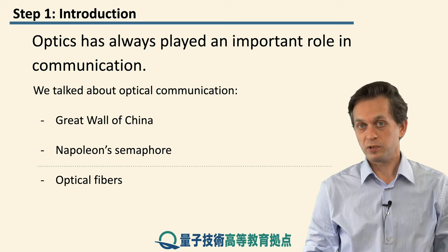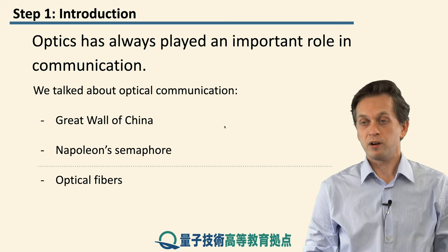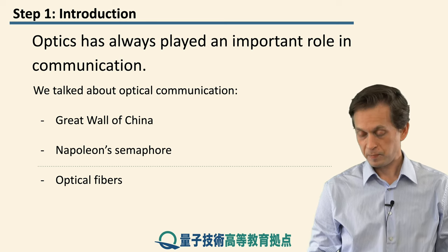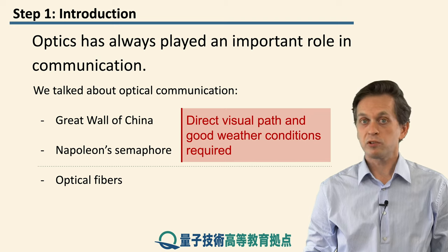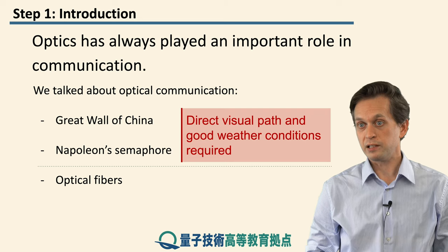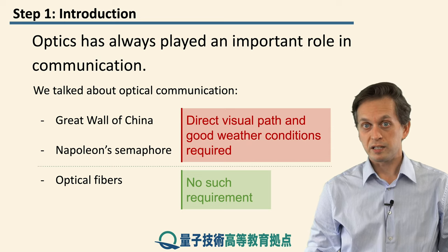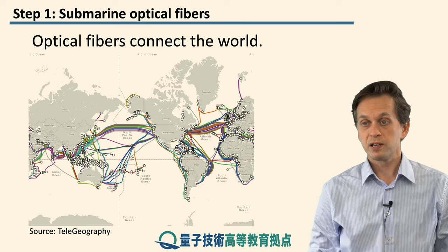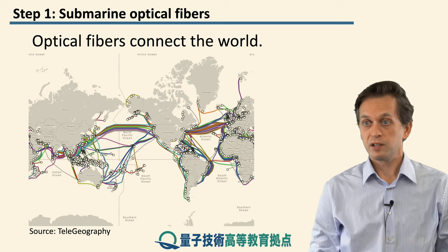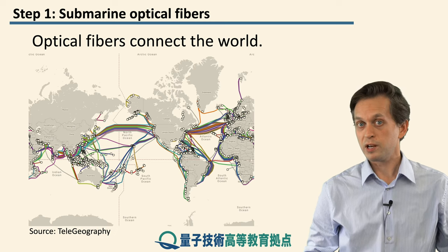Optics has always played an important role in communication. We saw examples of that already in the Great Wall of China and Napoleon's Semaphore, where optical signals were used to communicate. However, these methods were limited in that you had to have a direct visual path between sender and receiver, needed good weather conditions, and usually worked only in daylight. Then we learned how to guide light through waveguides known as optical fibers, and all those previous requirements disappeared, sparking an expansion in how quickly and how far we can communicate. This is a map of the main optical fibers that go across the seas and oceans — submarine optical fibers — connecting all the continents and allowing us to communicate from one side of the world to the other within milliseconds.